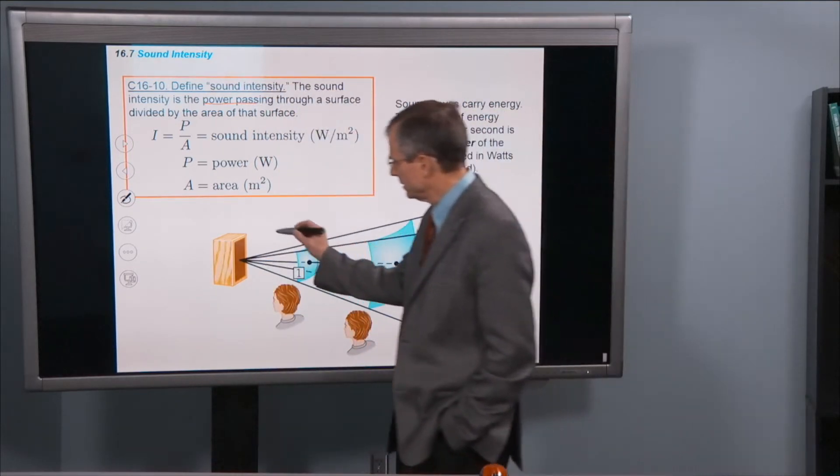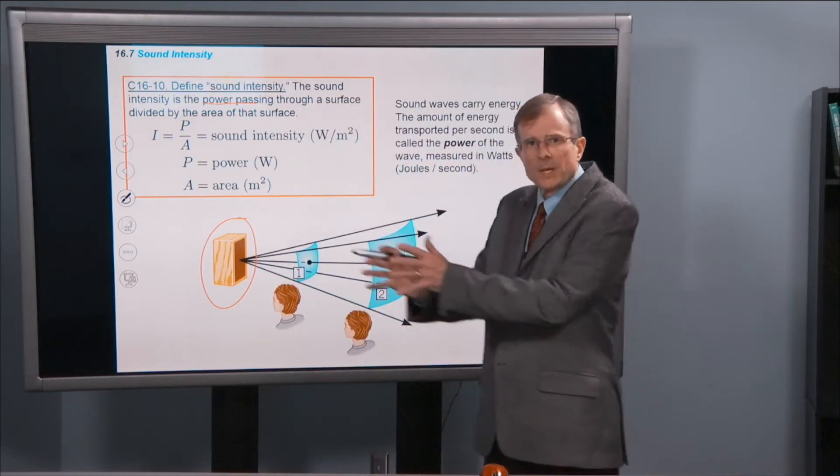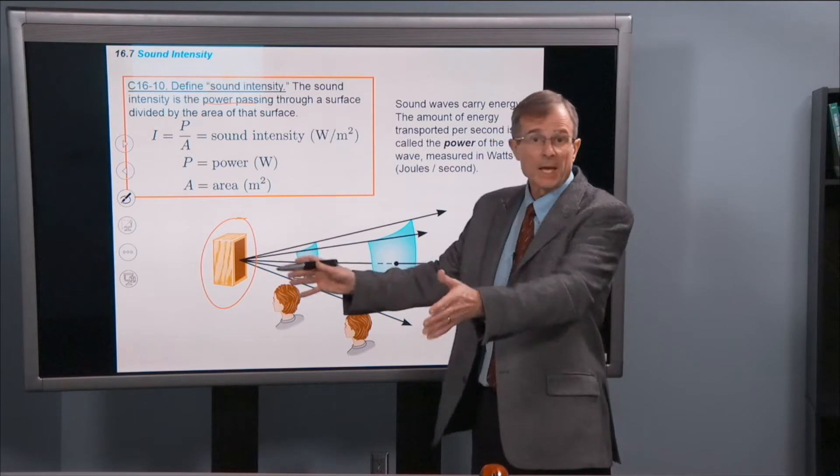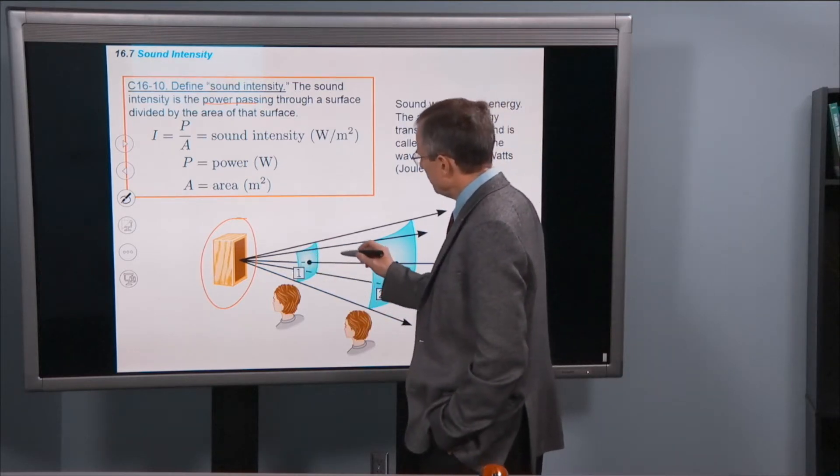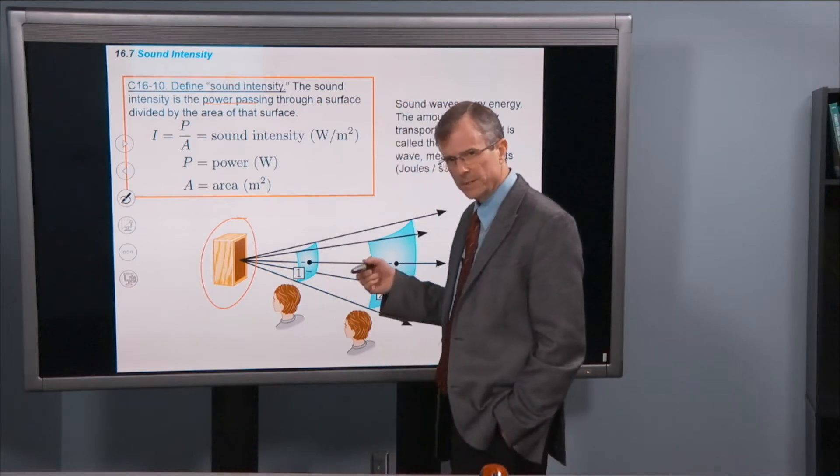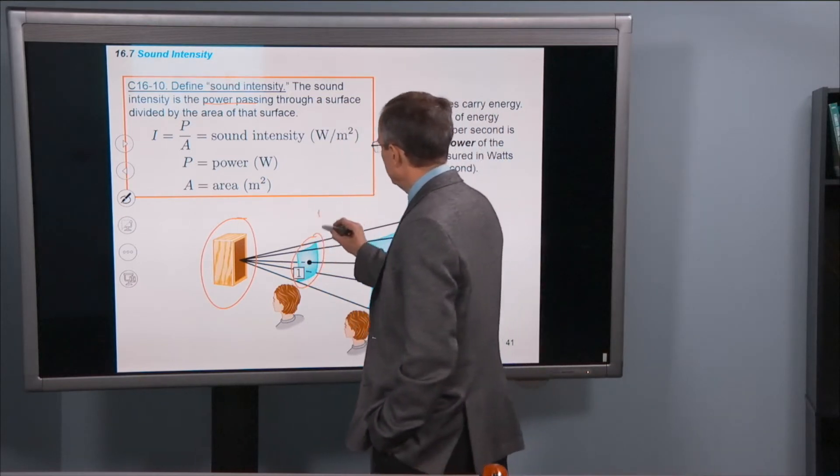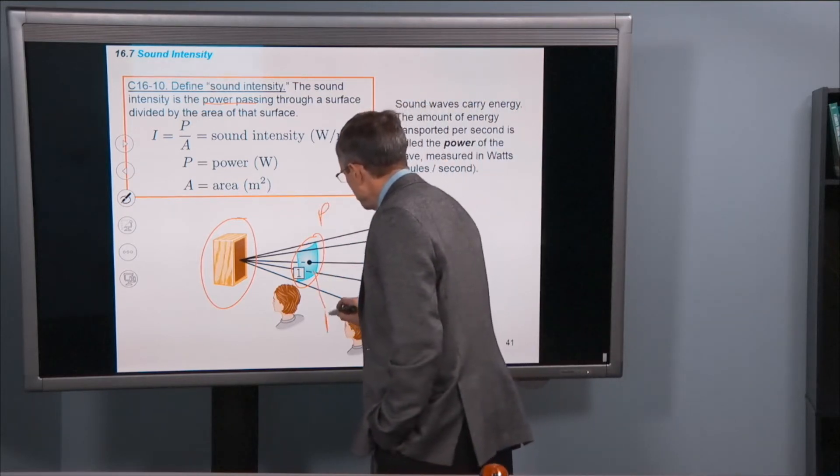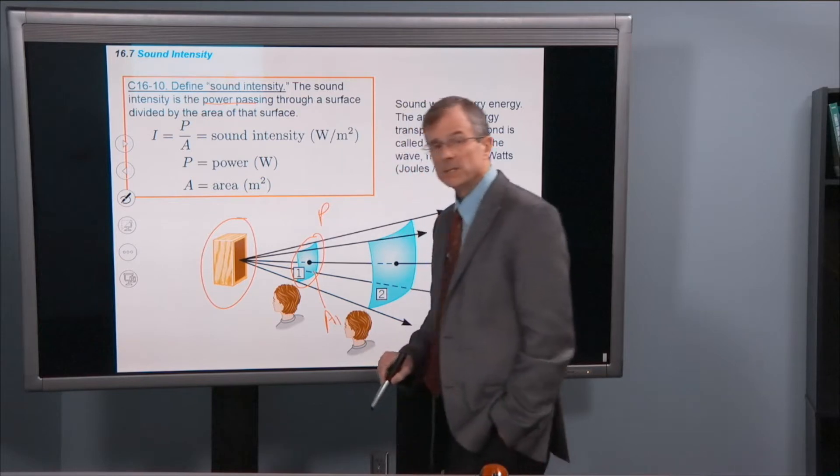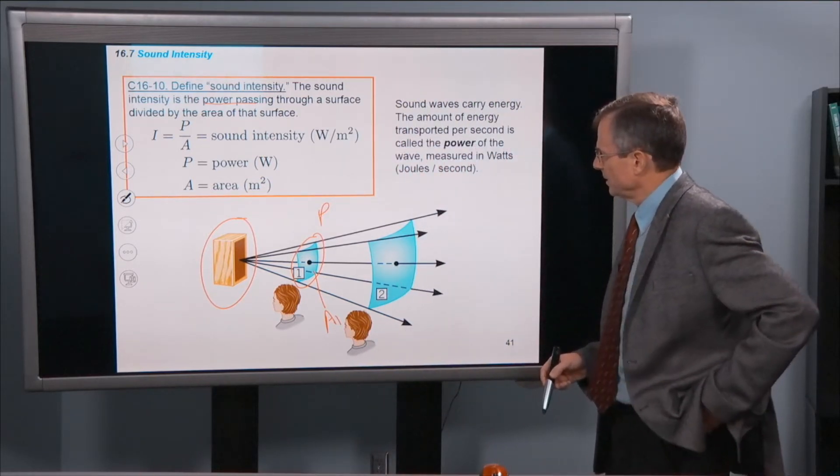So if you think about a speaker that's producing sound and the sound is coming out from that speaker and spreading out as it does. If the power of the sound passing this area is P, then and this area you denote by A sub 1, the area of this surface,